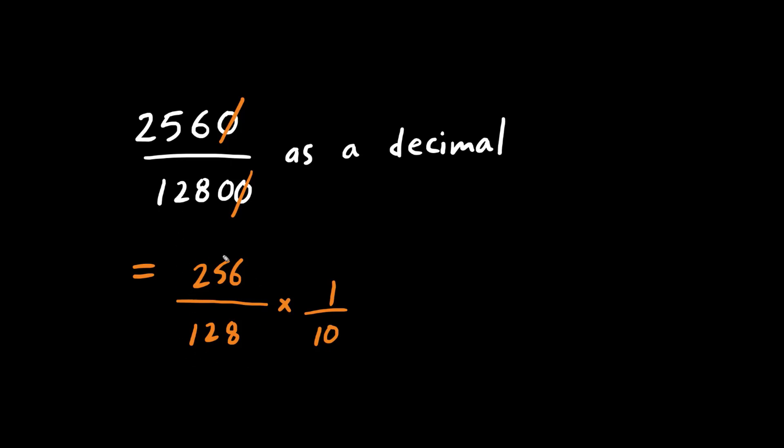Now look carefully at 256 divided by 128. The numerator is twice that of the denominator. So we can divide top and bottom by 128. So essentially we get 2 over 1.